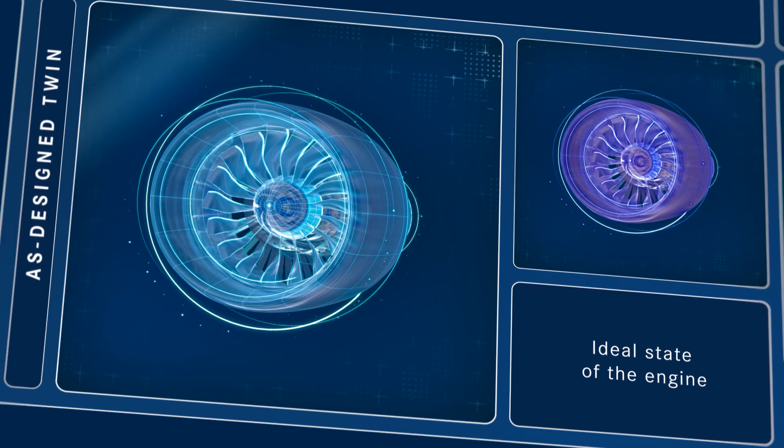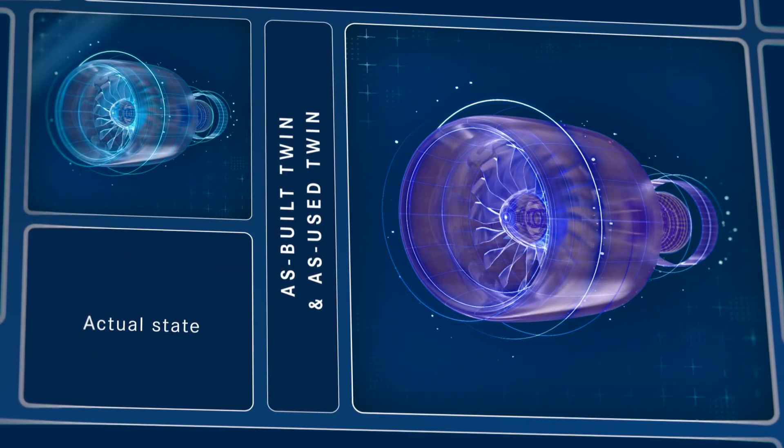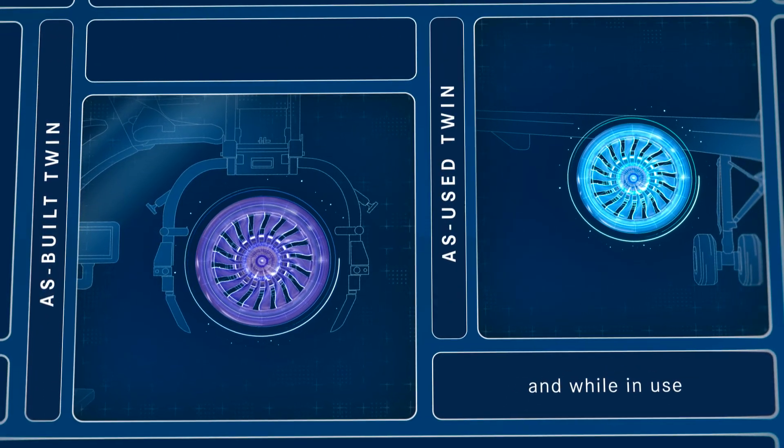The as-designed twin shows the ideal state of the engine. The as-built and as-used twin are the reality check, both in production and while in use.